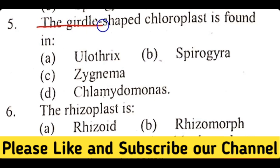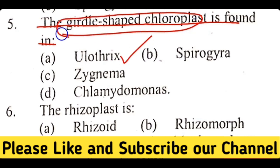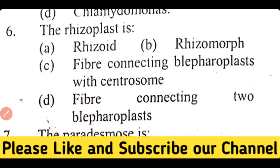Question number five: the girdle-shaped chloroplast is found in (a) Ulothrix, (b) Spirogyra, (c) Zygnema, or (d) Chlamydomonas. Correct answer is option A. Ulothrix has a girdle-shaped chloroplast.